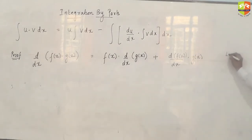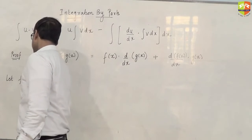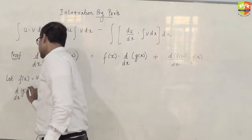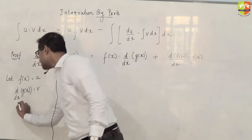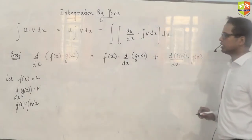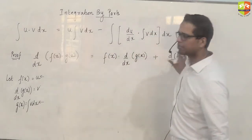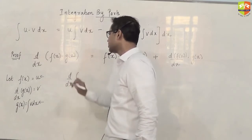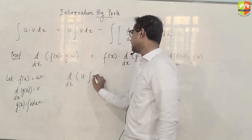Now let's substitute f(x) as u and derivative of g(x) as V. If I am saying derivative of g(x) is V, it means g(x) is integral of V. Now I will make these two substitutions in the entire problem. So d/dx of (u times integral V dx).